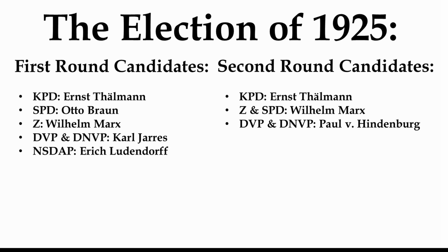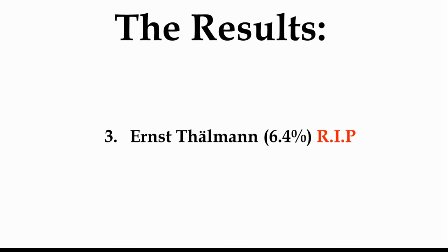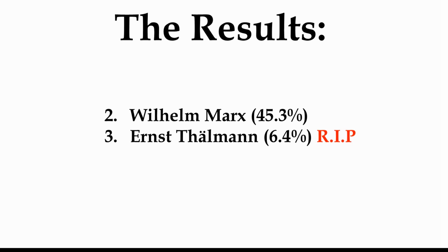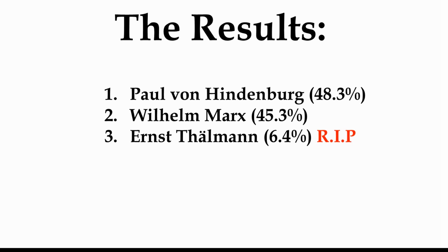What were the results? In last place, we have the communist Ernst Thälmann, who got a meagre 6.4% of the vote. In second place, Wilhelm Marx, the Zentrum candidate supported by the SPD, with 45.3% of the vote. But excruciatingly close, Paul von Hindenburg won with 48.3% of the vote, giving him the presidency of the Weimar Republic in 1925.